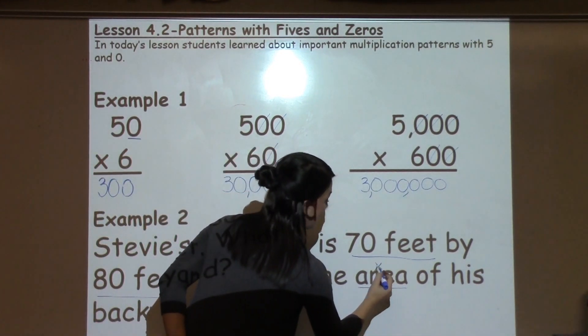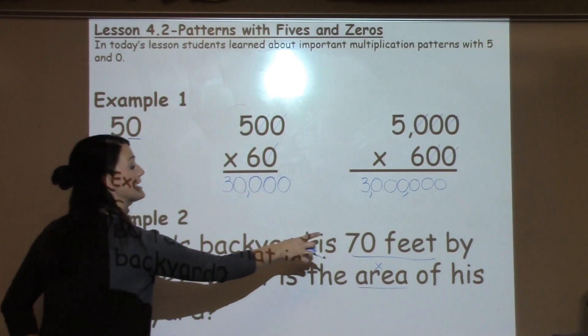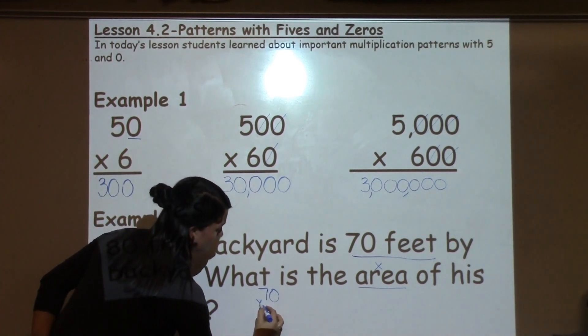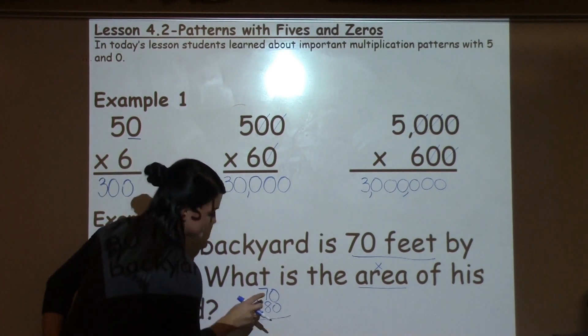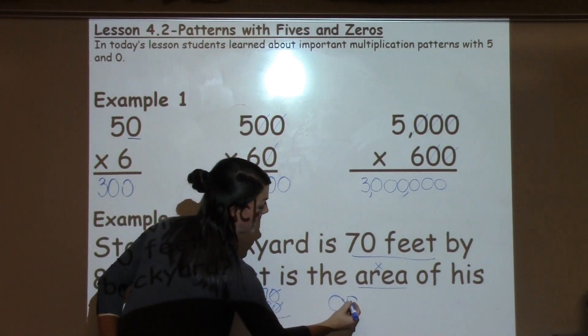Students will learn that area means to multiply the length times the width. So I've got 70 and 80. I see that it has 2 0s at the end. So I know that I can just add those on to my answer